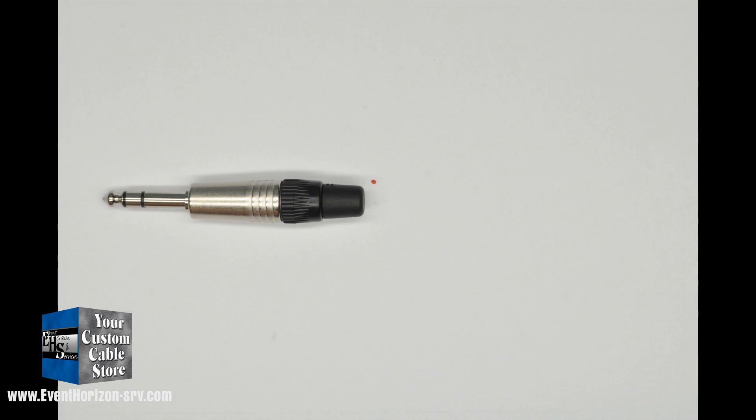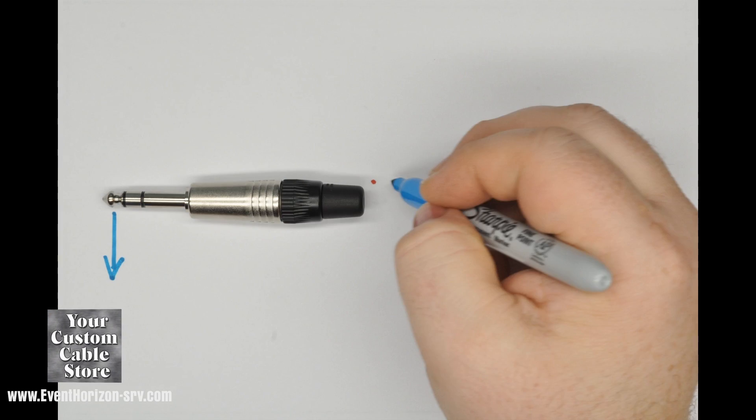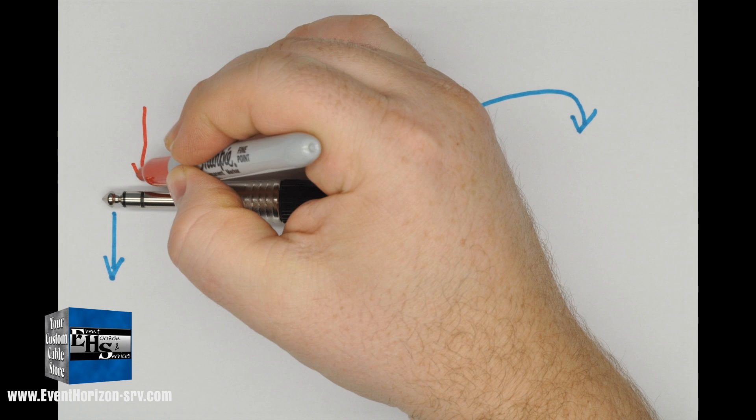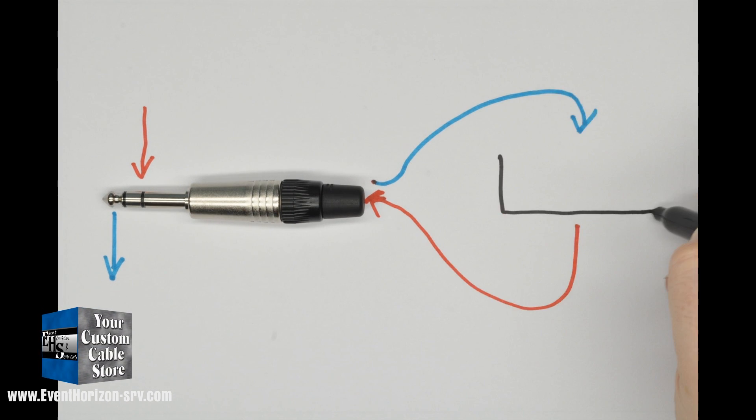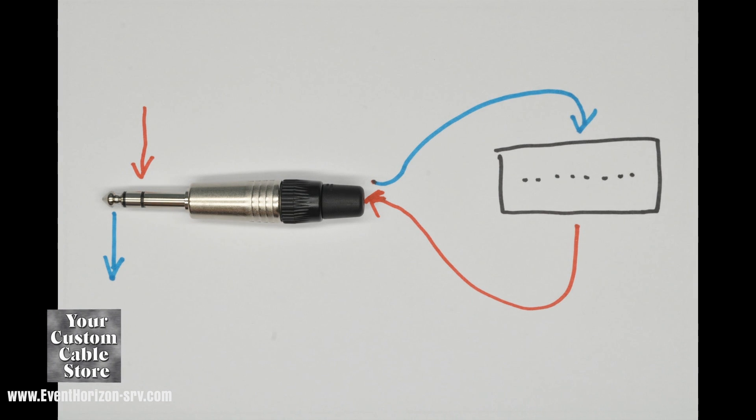It is also used for insert connections where you send and receive signals on one connection. Most commonly, the tip is the sending contact, the ring is the return contact, and the sleeve is the common.